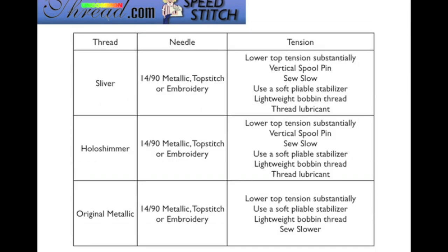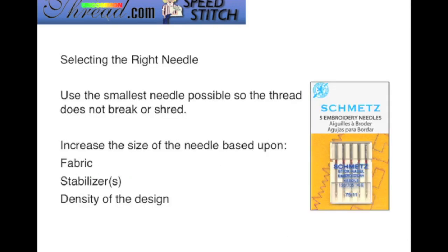If you have fabric that is heavier or additional stabilizer, then you need to increase the size of your needle. These charts are available at UncommonThread.com — go to the how-to video section and you can print out this presentation. In general, you want to use the smallest needle possible so that the thread does not break or shred, and then increase the size of the needle based upon the fabric, stabilizer, and density of the design you're working with.